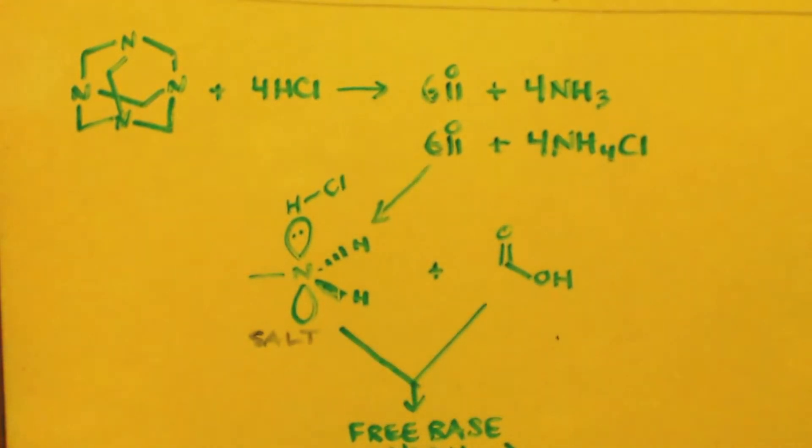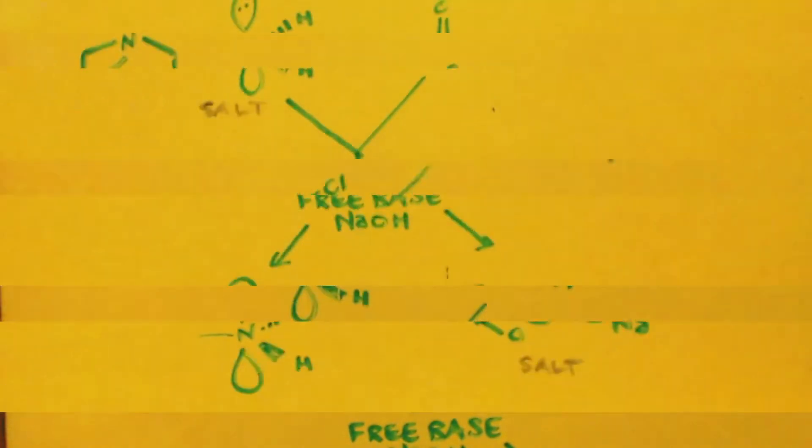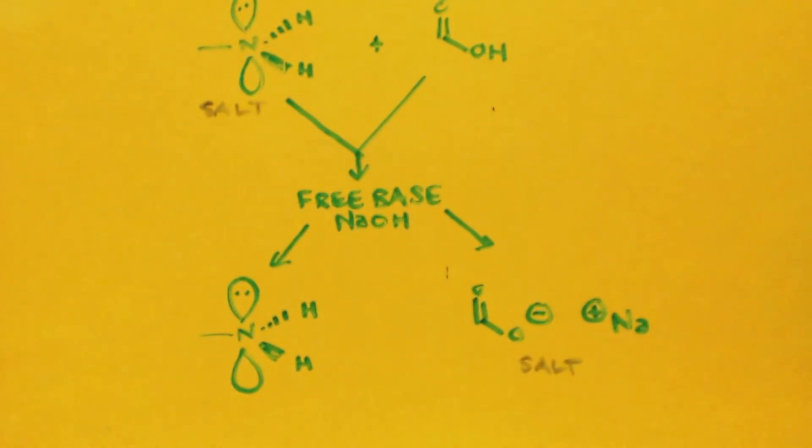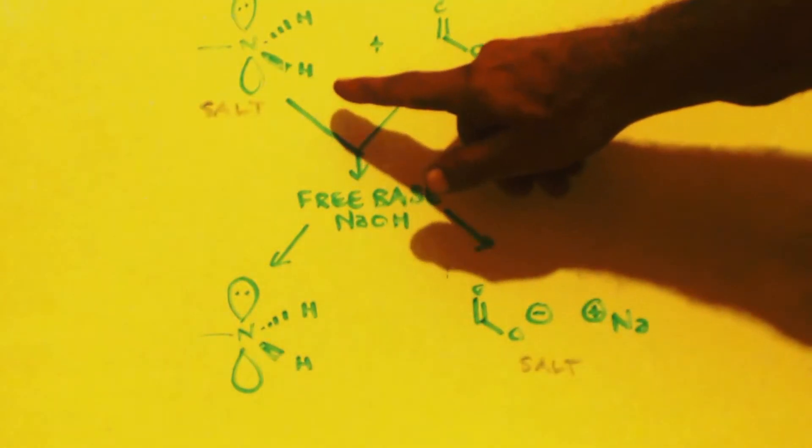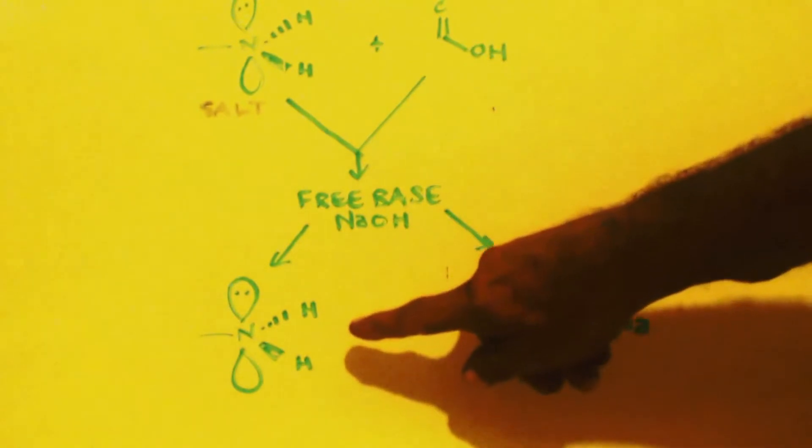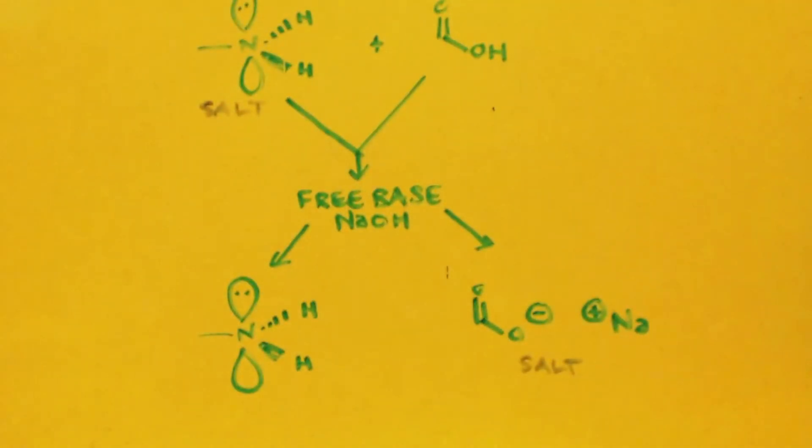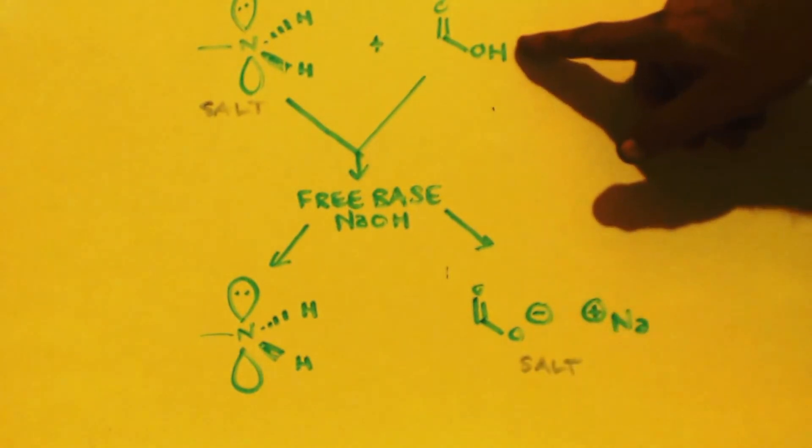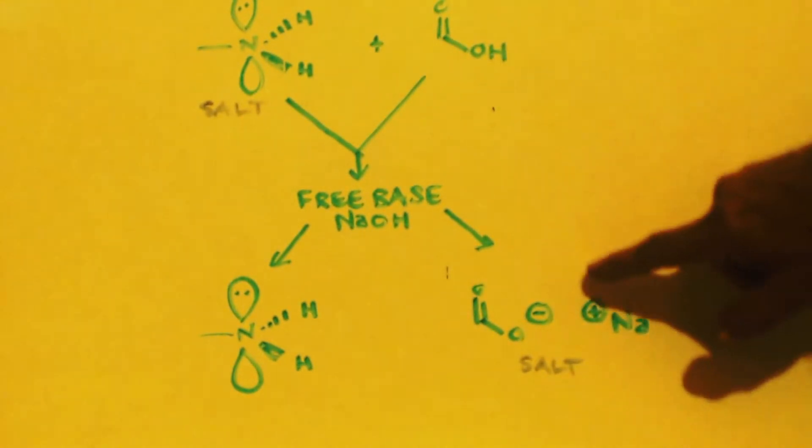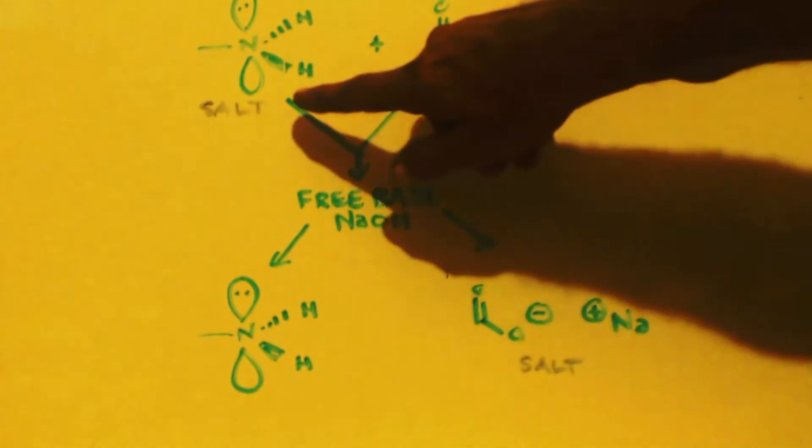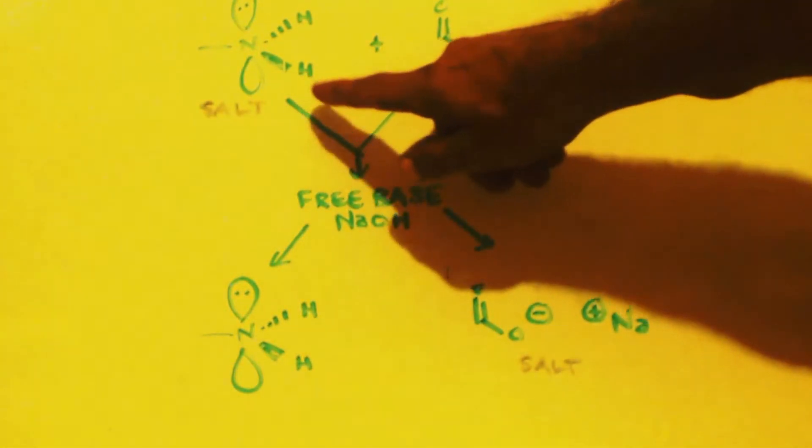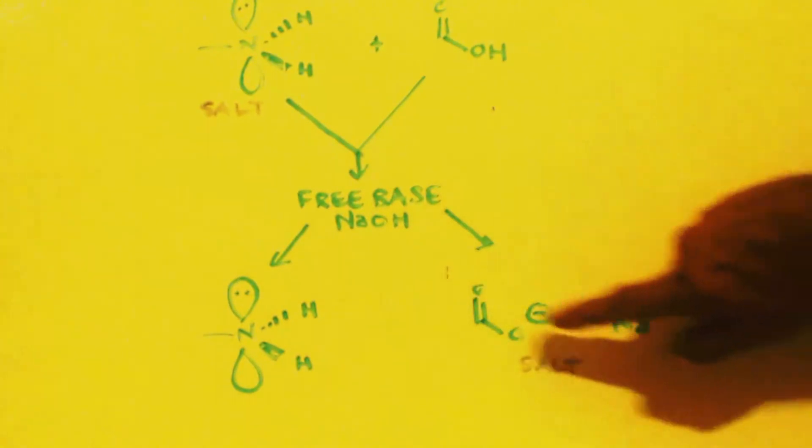Now if you free base that - let's say you make your methylamine and you got formic acid in there - how are you going to get it out? So you add some sodium hydroxide. What will happen is this salt of your methylamine will become just methylamine without the salt. This formic acid will turn into sodium formate.